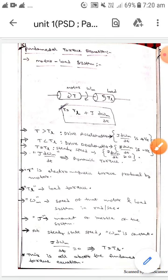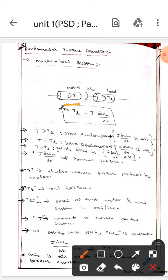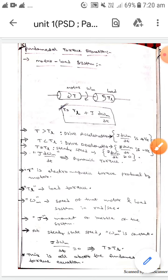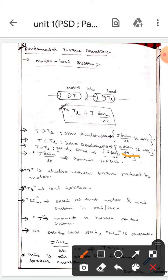Whereas if T is less than TL, then the drive de-accelerates and J × dωm/dt is negative. Whereas if T equals TL, then it will be steady speed where J × dωm/dt equals zero.